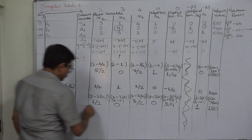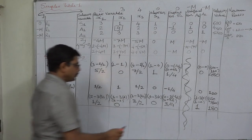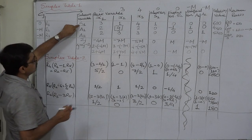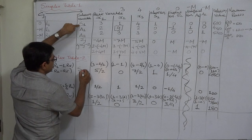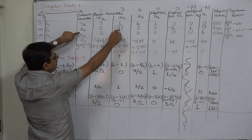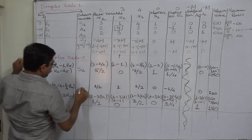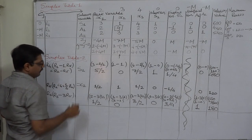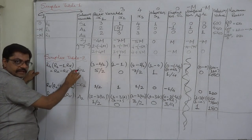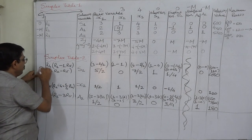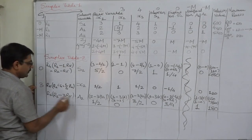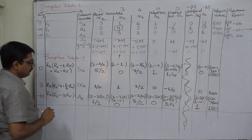Now first of all we have to write the solution variables in the first row. The first row is not the replacement row or key row, so no change — S1 as it was. A1 is the solution variable of the key row and will be dropped; in its place the variable of the key column will appear. So x2 takes the place of A1. The third row was not the key row, so no change — A2. The coefficient of x2 in the objective function is 3 and for A2 it is minus M.